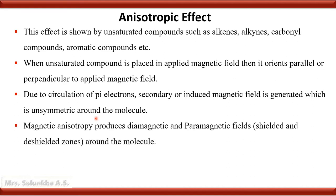Due to magnetic anisotropy, diamagnetic and paramagnetic fields are produced around the molecule. In the diamagnetic region, there is a shielded zone. In the paramagnetic region, there is a deshielded zone. Depending upon the presence of a proton in the diamagnetic or paramagnetic field, their chemical shift values are determined.